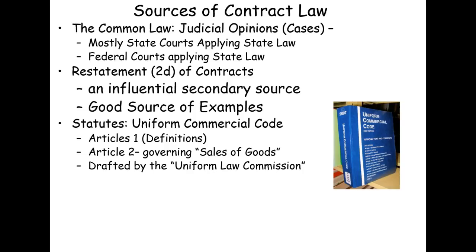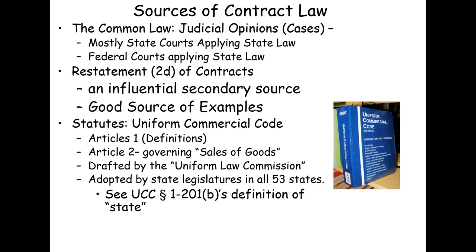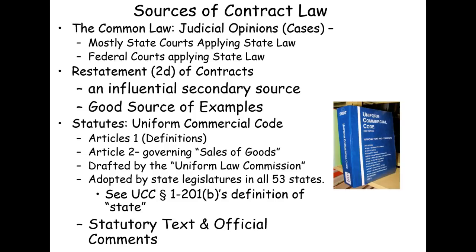The Uniform Commercial Code was drafted by the Uniform Law Commission back in the late 50s and early 60s and has now been adopted by state legislatures in all 53 states, including Ohio. The definition of 'state' in UCC Section 1-201(b) explains why there are 53. The official comments, while not formally adopted by most state legislatures, were drafted by the people who drafted the UCC and provide useful guidance about the meaning of the statutory text.